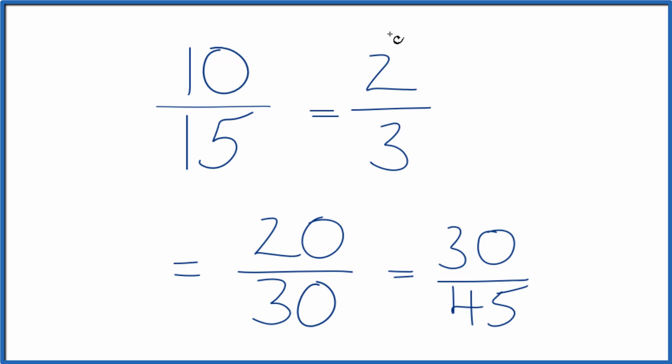So you divide 10 by 15, 2 by 3, 20 by 30, or 30 by 45, you get the same decimal answer. They're equivalent fractions. This is Dr. B, thanks for watchin'.